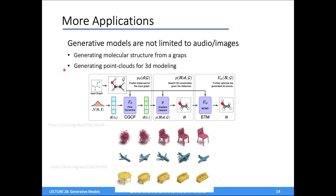These things can also be applied to modalities beyond images, video, and audio. One popular example is generative modeling for molecular problems: you might be given a graph corresponding to a molecule — atoms and their bonds — and predict the 3D shape of that molecule, which is a really hard problem in chemistry. People have also applied generative models to 3D modeling, generating point clouds representing 3D shapes. Really, this idea of sampling from your data distribution is widely applicable to almost any type of data you can imagine.